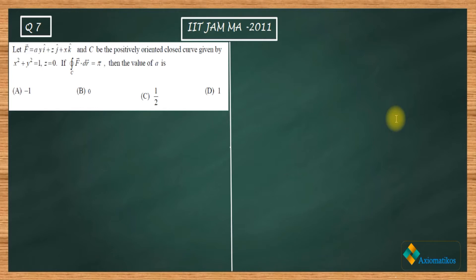Let us have a look. It says let f vector - so we have a three-dimensional vector, and c be the positively oriented closed curve given by x² + y² = 1.